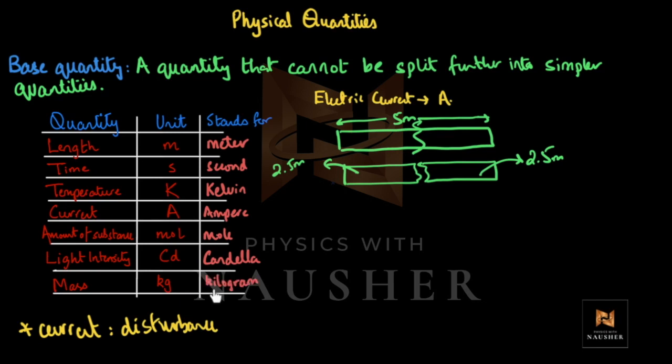The unit kilogram has a small 'k' — don't forget. So: the object was 5 meters, we broke it, and it became 2.5 meters.